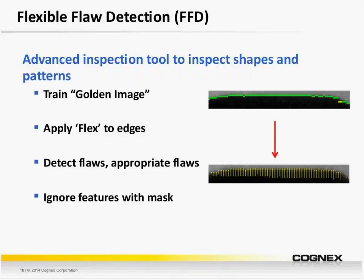Next, we have our FlexFlaw detection tool. With this tool, we may perform edge or area inspection, but with one critical feature: we can apply Flex to our golden image. With natural process variation, it might be difficult to simply train a pattern, since patterns look for edges or grayscale values at a particular pixel location. With the Flex feature, the features can flex a few pixels in all directions from the trained image. Since this is a defect detection tool, after we apply the Flex we can use another sub-tool to detect defects. And like the Surface Flaw tool, as an option we can ignore features with a mask applied to the image.